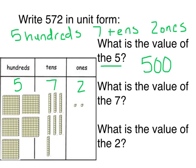What is the value of the seven? The seven is in the tens place, so I need to count by tens. I have seven tens: ten, twenty, thirty, forty, fifty, sixty, seventy. The seven is worth seventy because there are seven tens.